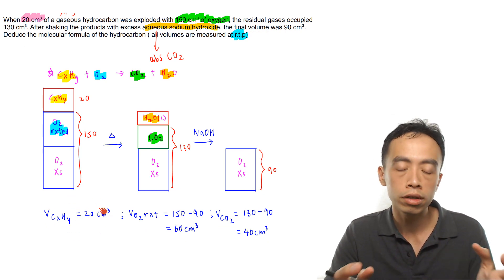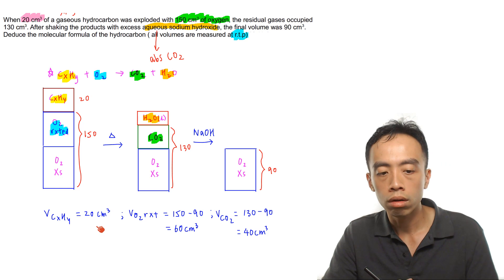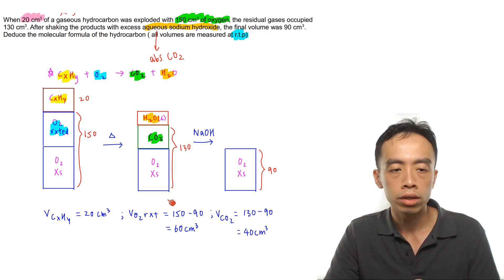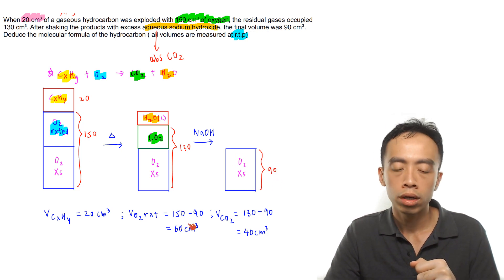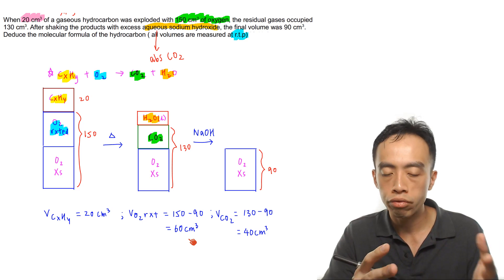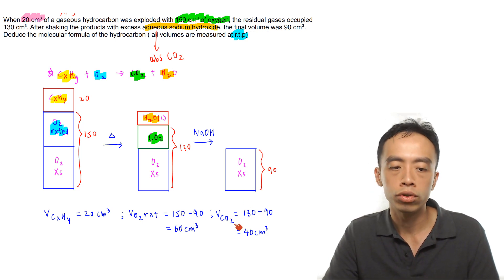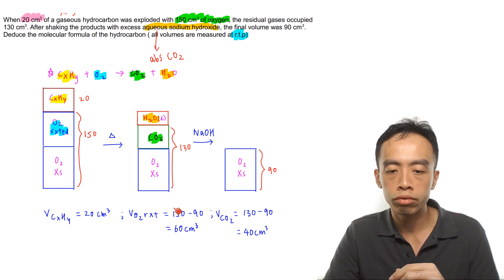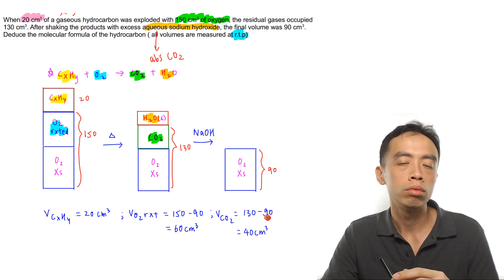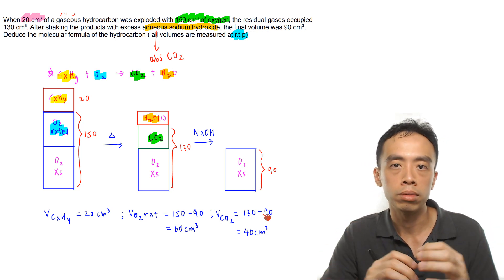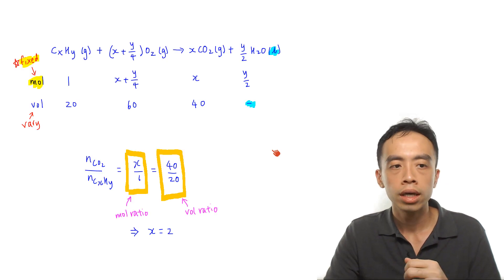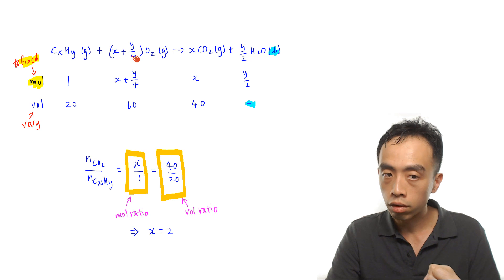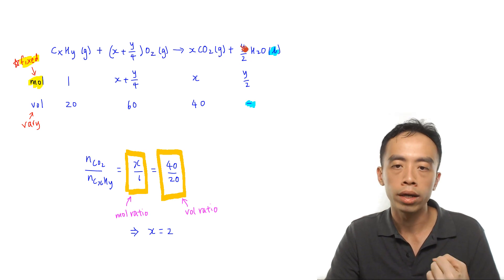We can now work out all volumes. Volume of hydrocarbon: 20 cm³ (given). Volume of oxygen reacted: 150 minus 90 = 60 cm³. Volume of carbon dioxide: 130 minus 90 = 40 cm³. With these values, we can fill in the table based on the balanced equation.